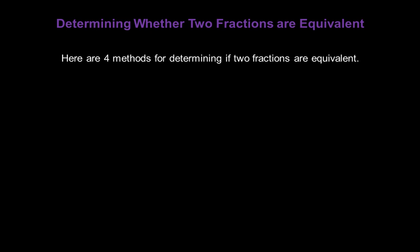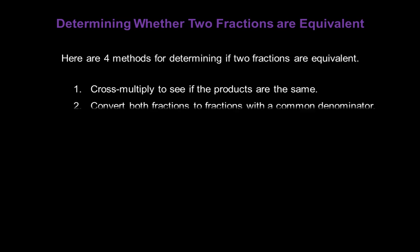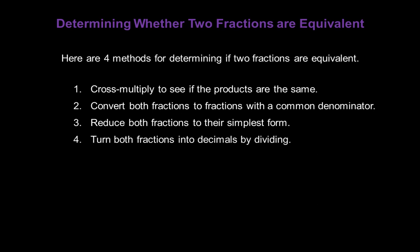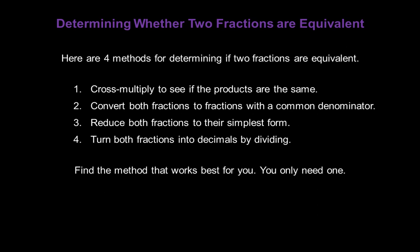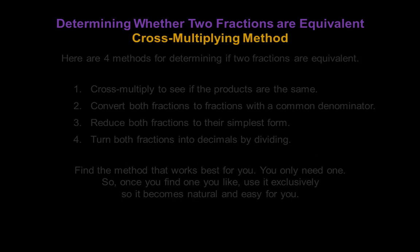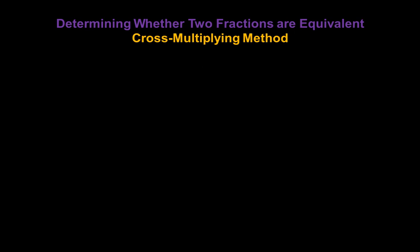What if someone gives us two fractions and asks us if they're equivalent? Here are four methods for determining if two fractions are equivalent. Method one: cross multiply to see if the products are the same. Method two: convert both fractions to fractions with a common denominator. Method three: reduce both fractions to their simplest form. Method four: turn both fractions into decimals by dividing. Find the method that works best for you — you only need one of these four, so use it exclusively until it becomes natural and easy.